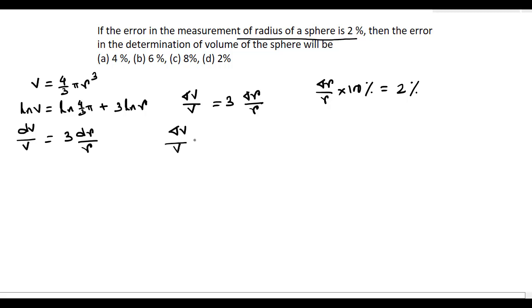Now, if we multiply this equation by 100 percent, that is delta V by V into 100 percent is equal to 3 delta r divided by r into 100 percent. Put the value of this, that is delta r by r into 100 equal to 2 percent, that is 3 into 2 percent. This is equal to 6 percent.